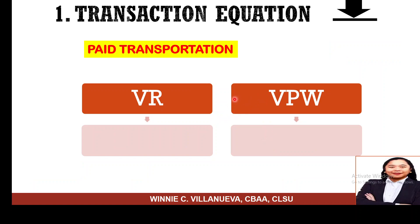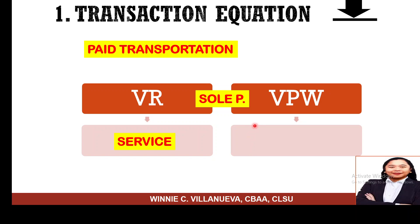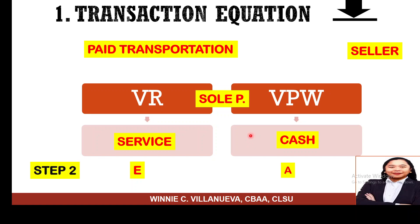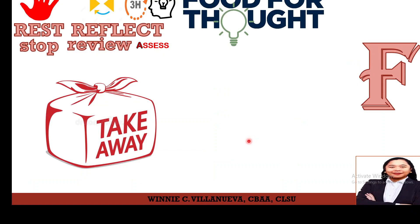Of course, when you have a business, you normally pay for transportation. When you take transportation — a tricycle, bus, jeep, or van — what does the business receive? The transportation service. That is an expense — it reduces equity. What do you give out to pay for it? Cash, so your money is reduced. The counterparty in this transaction is the service provider — the bus company or owner of the tricycle.